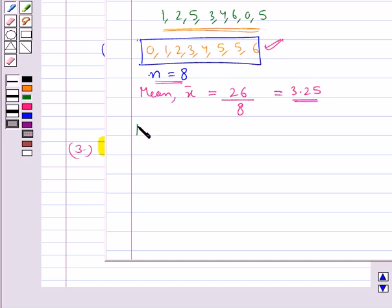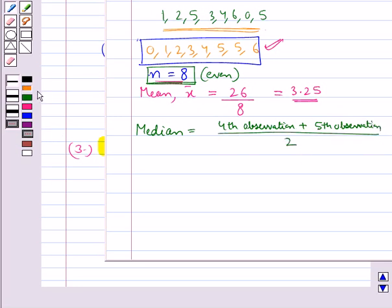Now next, let's find out the median. As you can see, the total number of observations, that is n, is 8, which is even. So median is given by the mean of the n/2 th observation, that is the 4th observation, and the (n/2 + 1) th observation, that is the 5th observation. From this data, we have the 4th observation is 3 plus the 5th observation is 4, upon 2. This is equal to 7/2, which is equal to 3.5.